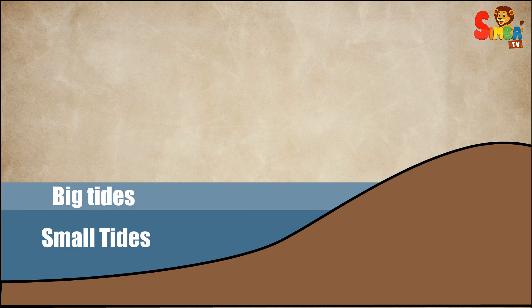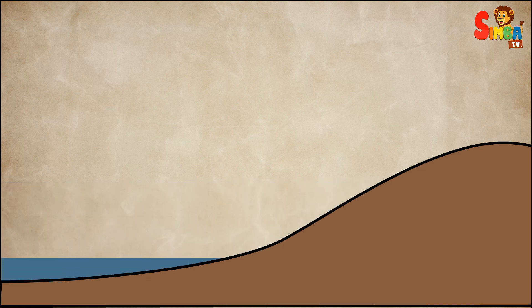Shaped by land. The shape of the land and the ocean floor can make tides bigger or smaller. Some places have really big tides and some have small ones.